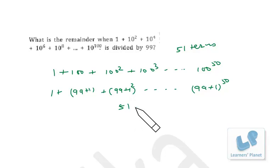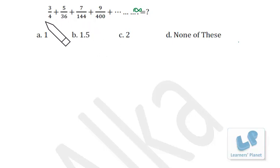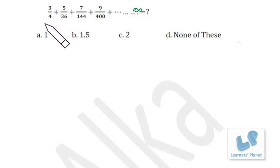Now let's see this problem: 3/4 plus 5/36 plus 7/144, going till infinity. The sequence is going on — seems to be difficult, but let's try. In these sorts of problems, there is always a clue in the denominator.